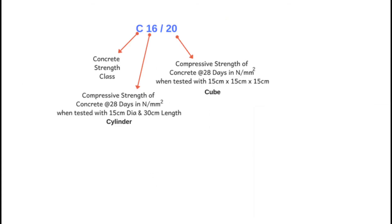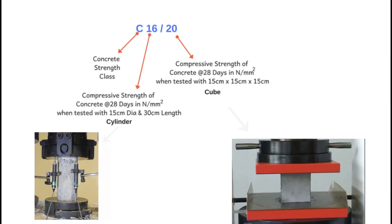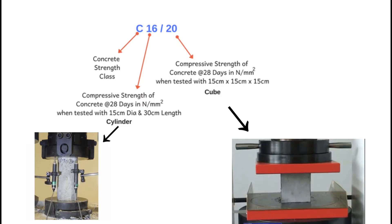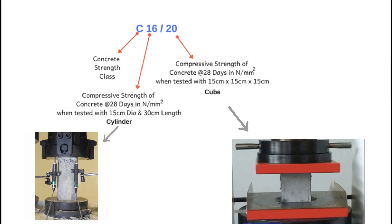The grade of concrete is also denoted as C16/20, etc., which means concrete strength class C. The number behind C refers to the compressive strength of concrete in newton per millimetre square when tested with cylinder or cube.